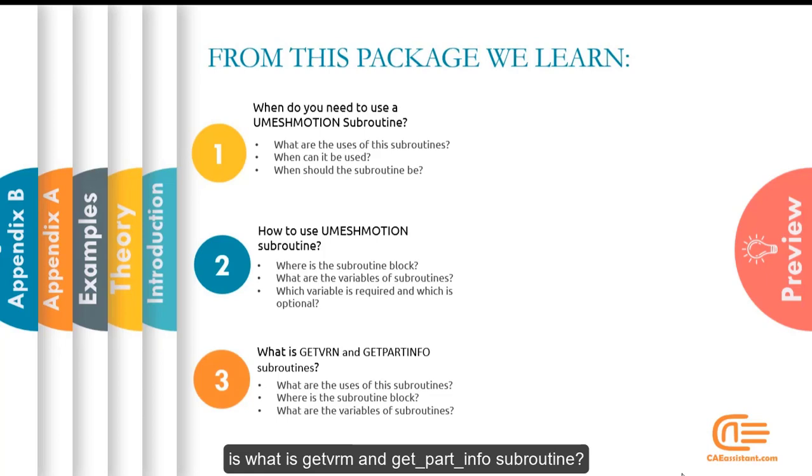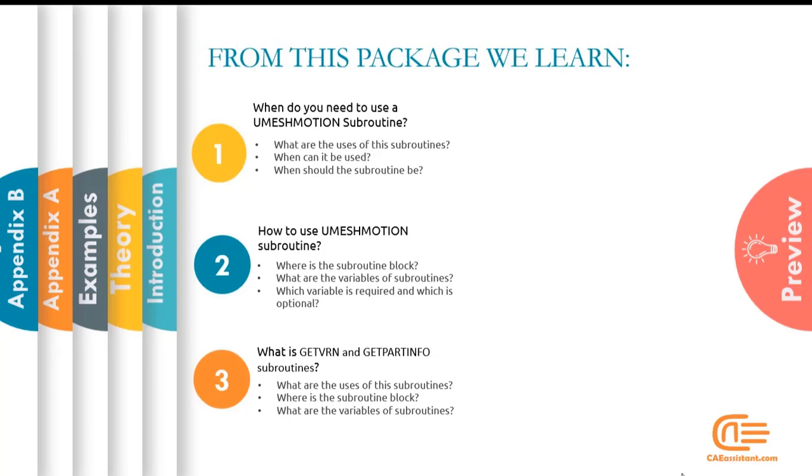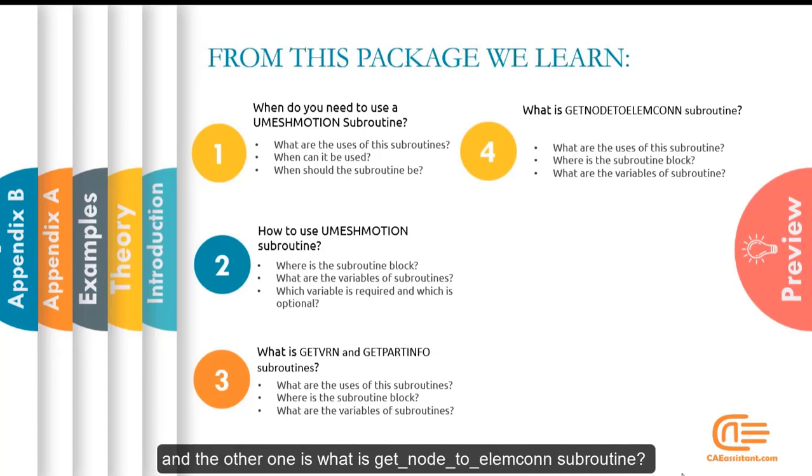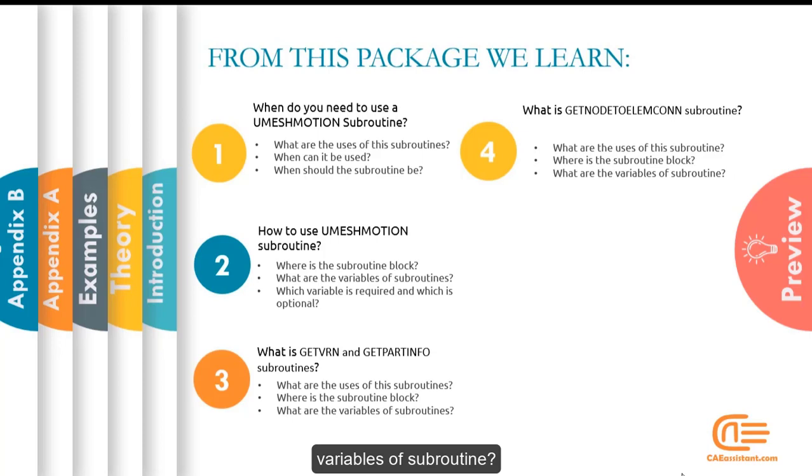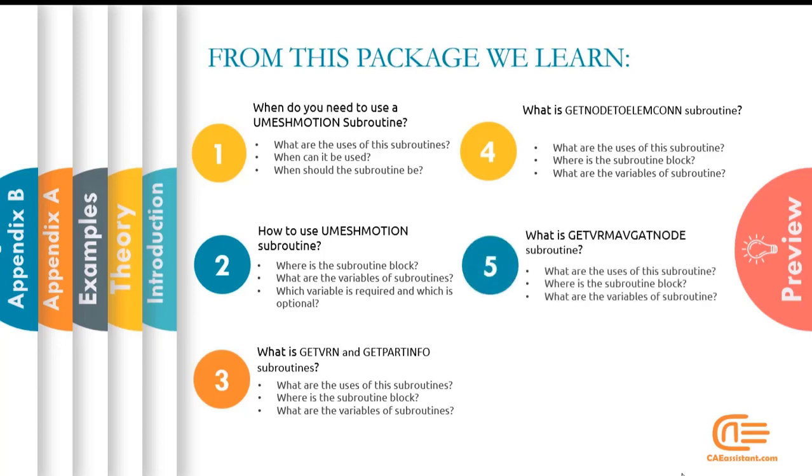And the third one, what is the GetVRM and GetPartInfo Subroutine? These subroutines are two utility subroutines which can help us to write UMESHMOTION Subroutine. What are the uses of these subroutines? Where is the subroutine block? And what are the variables of subroutine? And the other one is what is GetNodeToElecon subroutine? What are the uses of this subroutine? Where is subroutine block and what are the variables of subroutine? What is GetVRM AVG at node subroutine? The cases under review are the same as the previous subroutine.